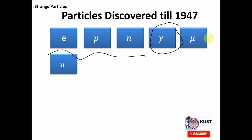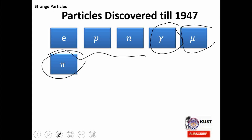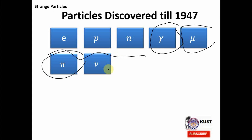And then we have two new mediators — these are the mediators of the strong force. At that time it was called the Yukawa force, because Yukawa thought that inside the nucleus, when we have protons and neutrons exerting force on each other, they actually exchange muons and pions. These are called mesons. Later on, it was known that the pion is actually the mediator of the strong force and not the muon. And then another particle we call the neutrino, which is needed in the explanation of beta decay, where the law of conservation of energy is restored if we consider that the neutrino is there. So these are the six particles known at that time.